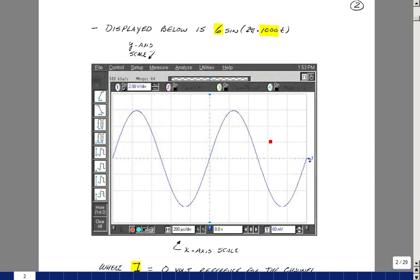Here we've got one division, two divisions, three divisions above ground, and the scale is two volts per division. So it's going to give us six volts. Likewise, this would be minus two, minus four, minus six. So indeed it is a six-volt peak sine wave.